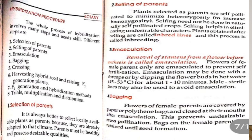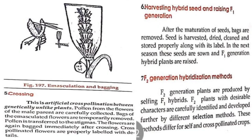Bagging: flowers of the female parent are covered by paper or polythene bags and closed at their mouth after emasculation. This prevents undesirable cross-pollination. Bags on the female parent are retained until seed formation. Crossing: this is an artificial cross-pollination between genetically unlike plants. Pollen from the flower of the male parent are carefully collected; bags of the emasculated flower are temporarily removed and pollen is transferred to the stigmas. The flowers are again bagged immediately after crossing, and the cross-pollinated flowers are properly labeled with details.